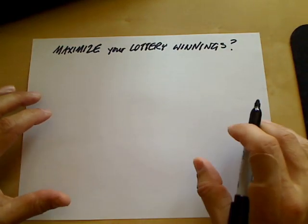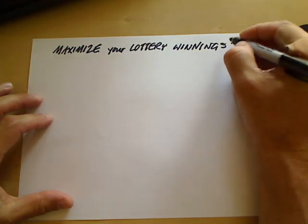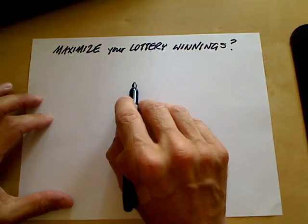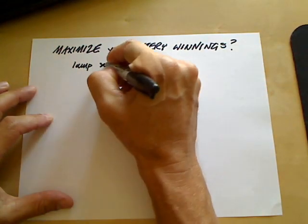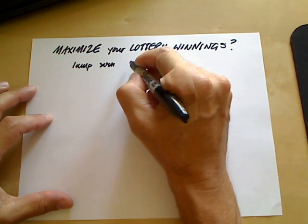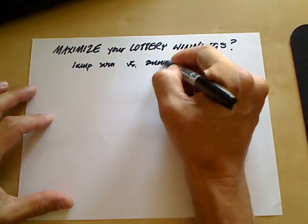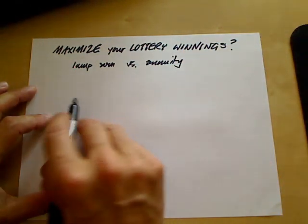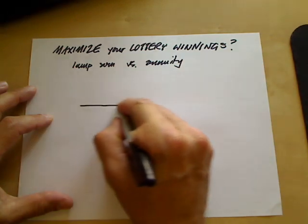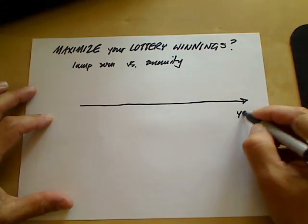One of the problems we all wish we had is whether we should take the lump sum or the annuity when we win the mega jackpot. If you're fortunate enough to win the lottery, you have the choice between taking your money all at once or spread out over any number of years.